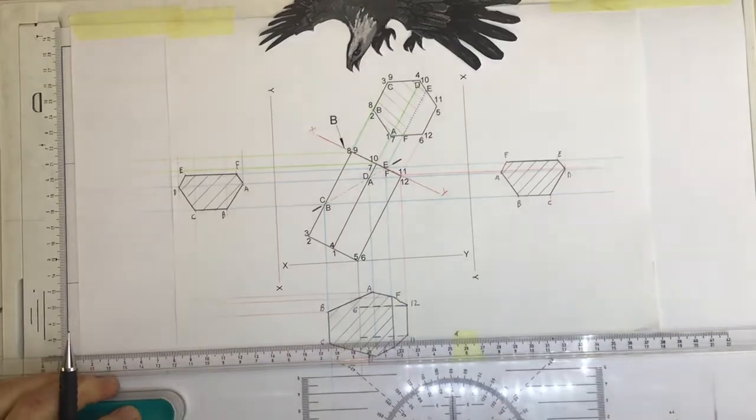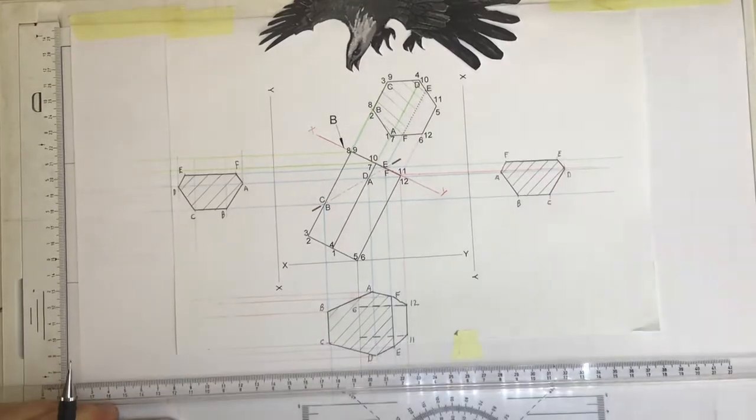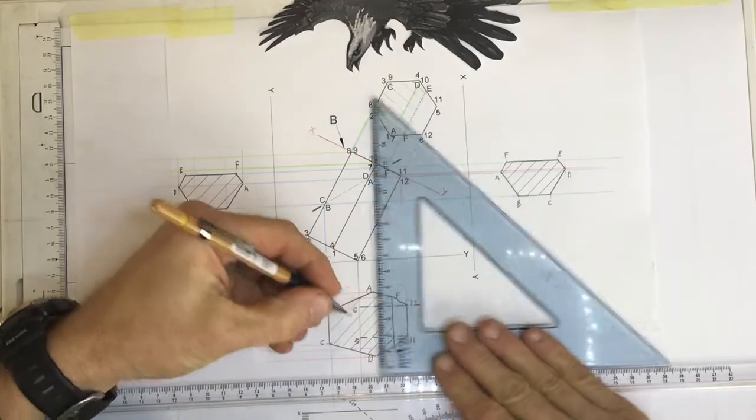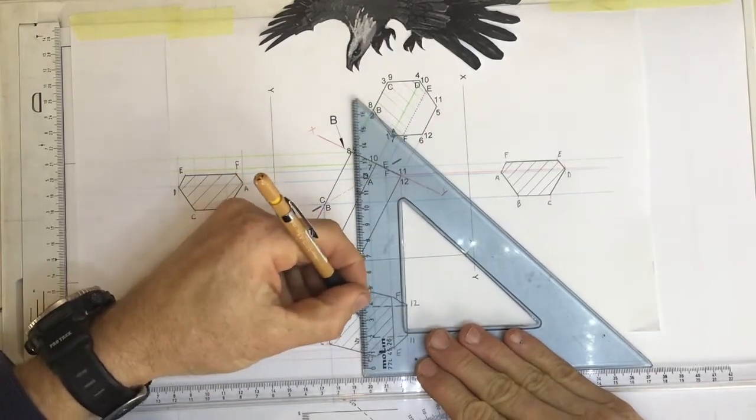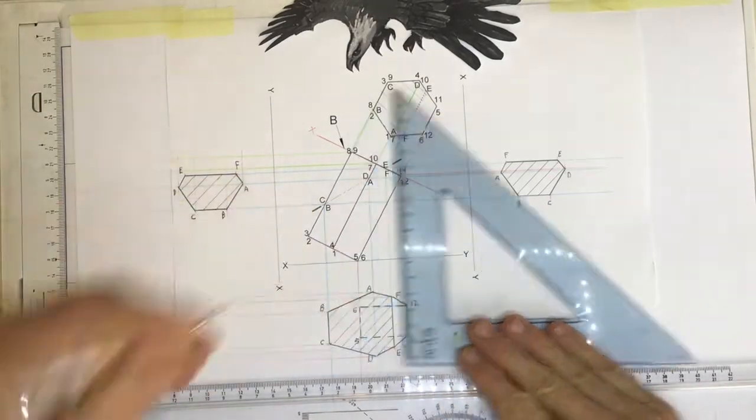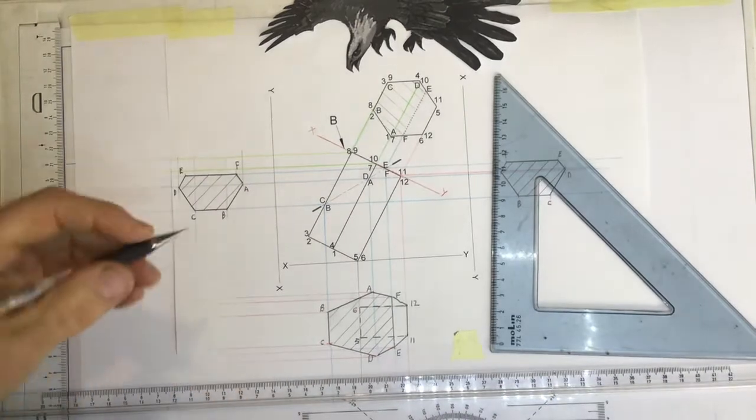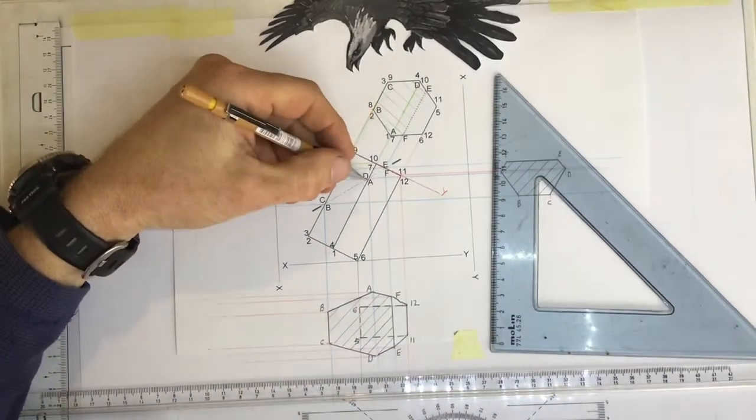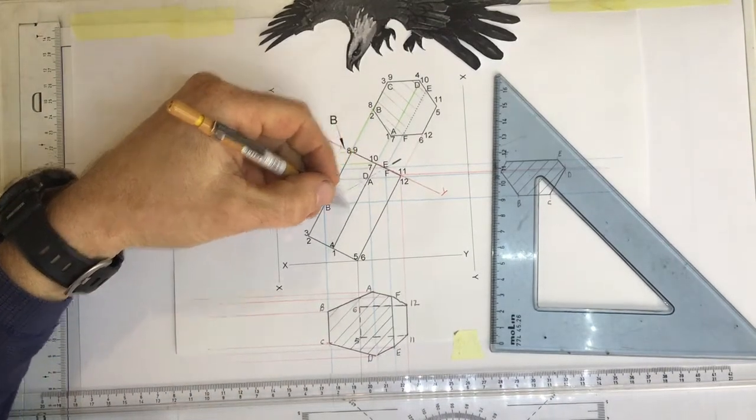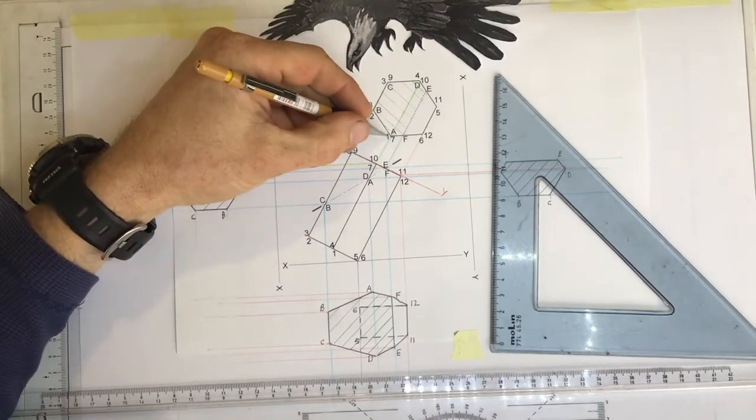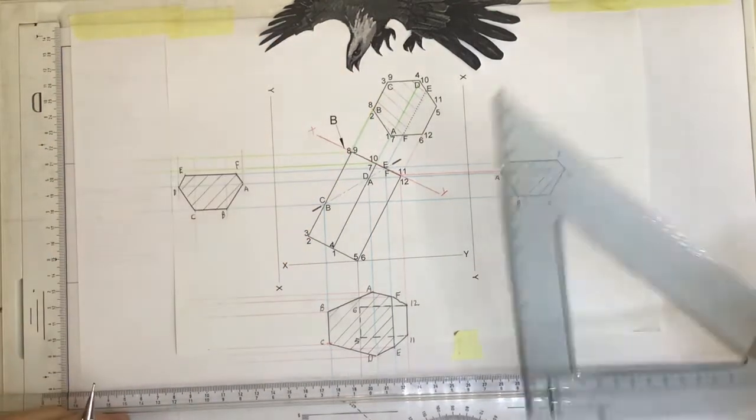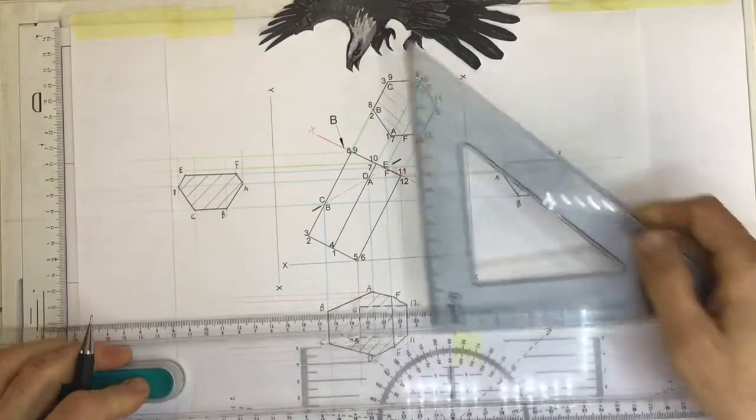And I obviously have a line going between five and six, which is also going to be hidden detail. Let's take a look at A going down to one. There's A and one. A and one are in line with each other. Where is one? There is one over there.